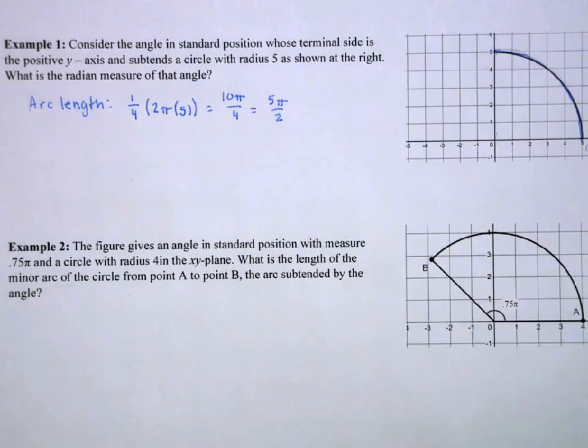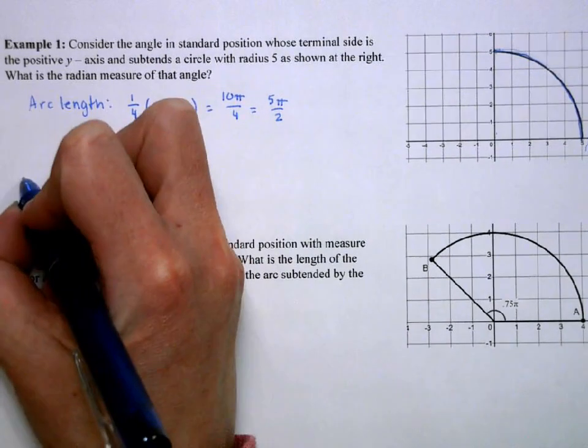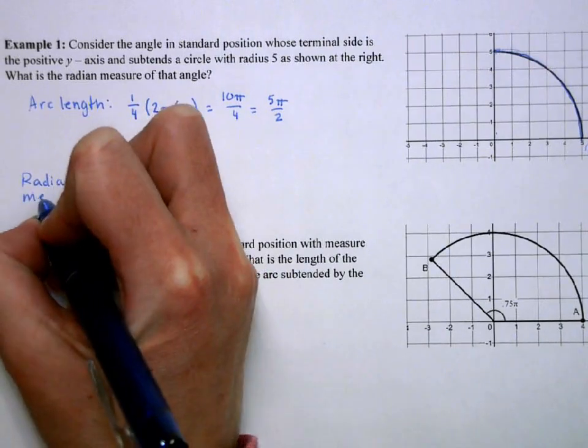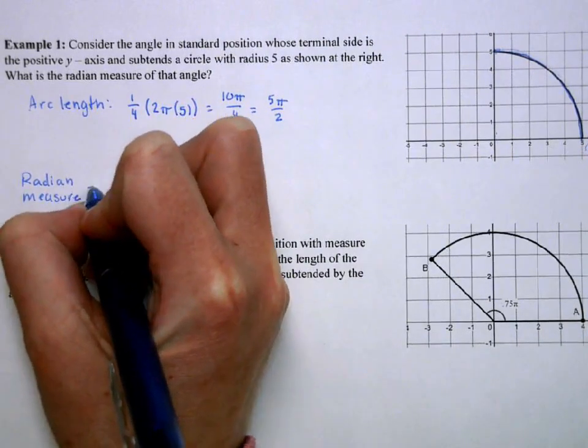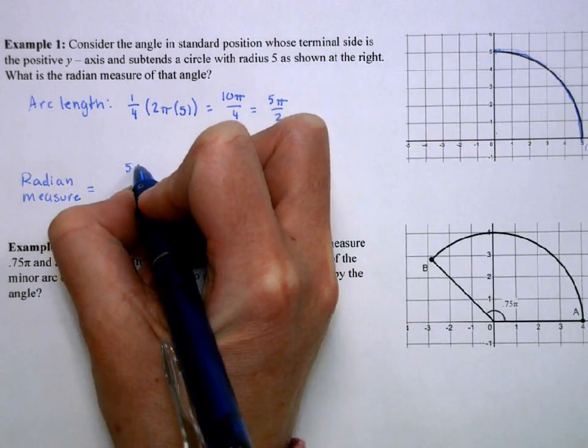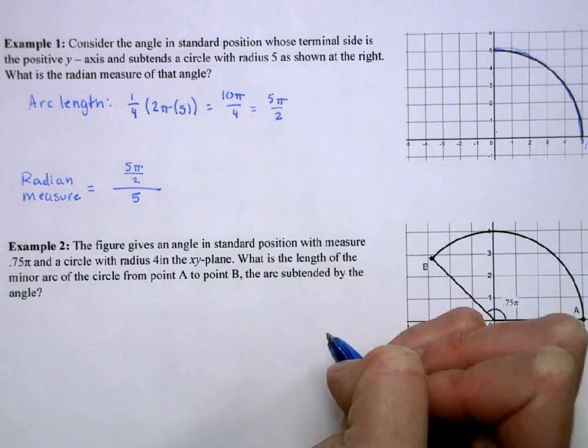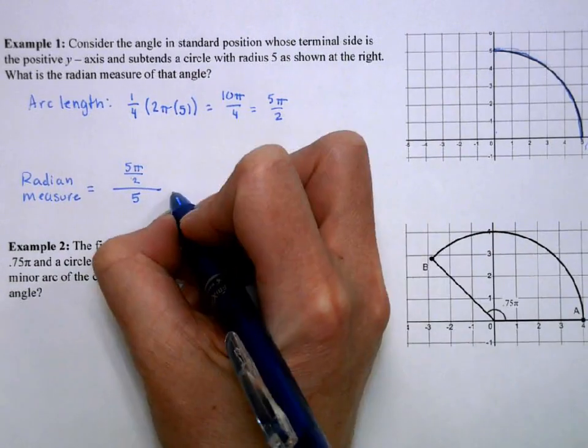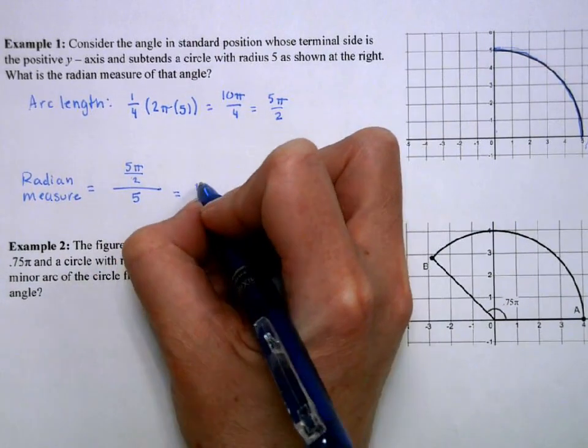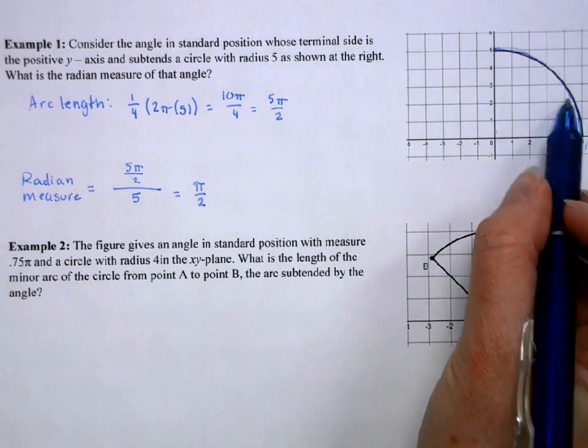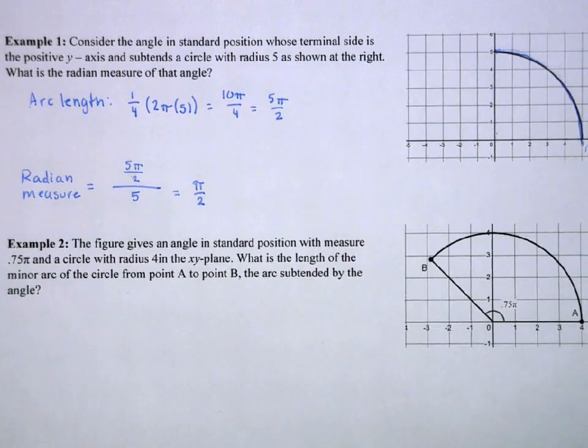But that's just the arc length. For the radian measure, it's that arc length, 5π over 2, divided by the radius, which was 5. Well, 5π divided by 2, divided by 5, is π over 2. So, the radian measure of this angle here is π over 2.